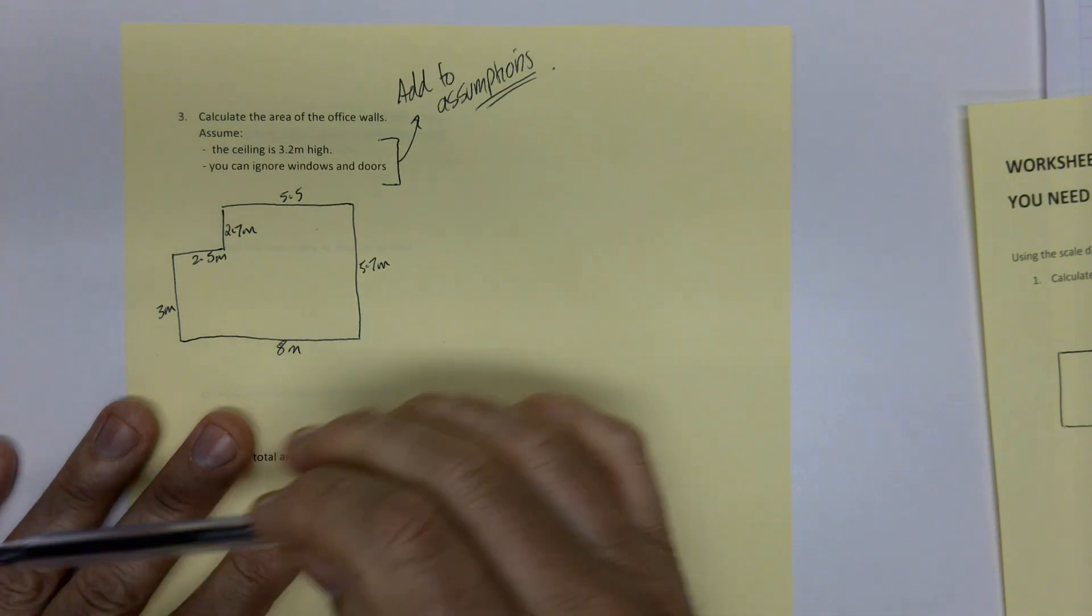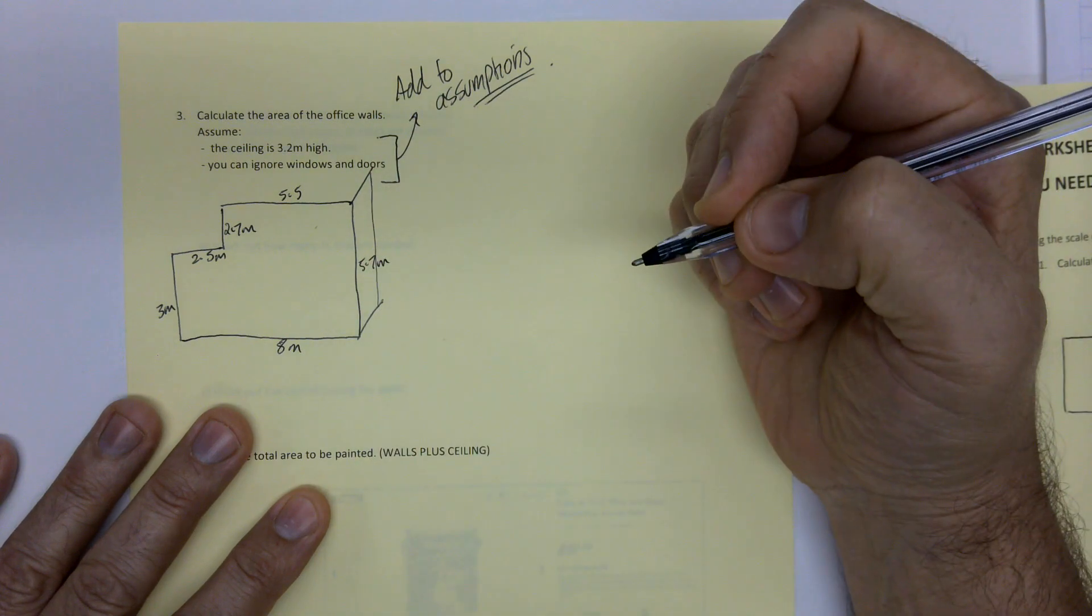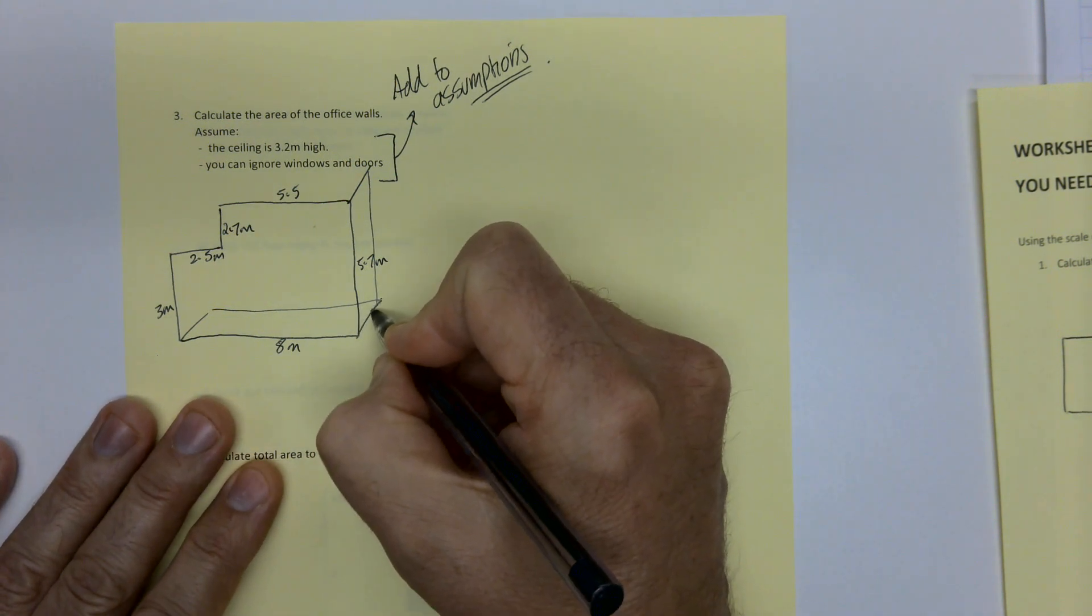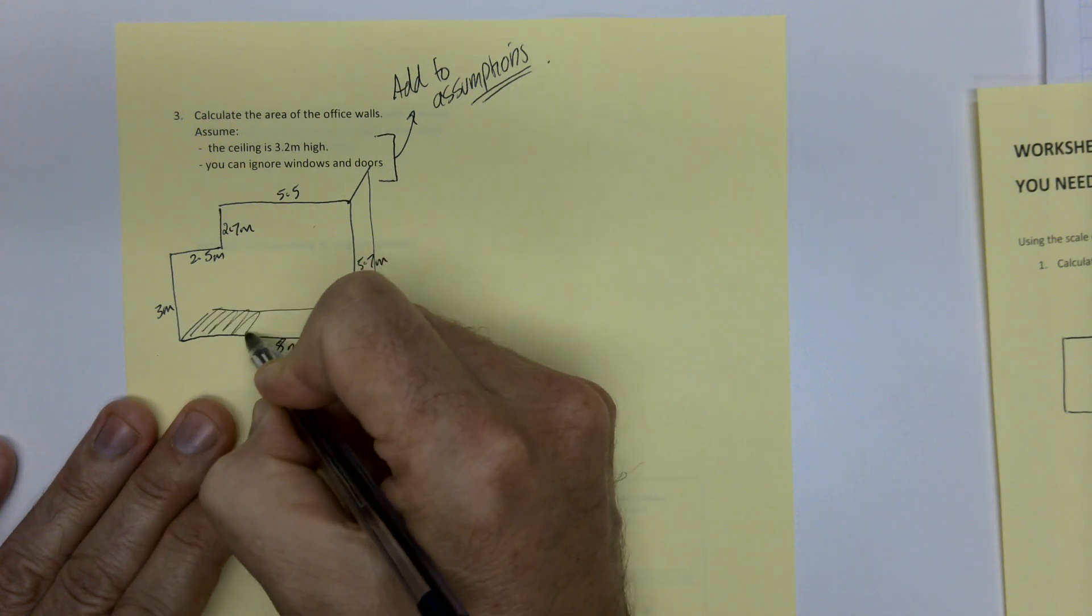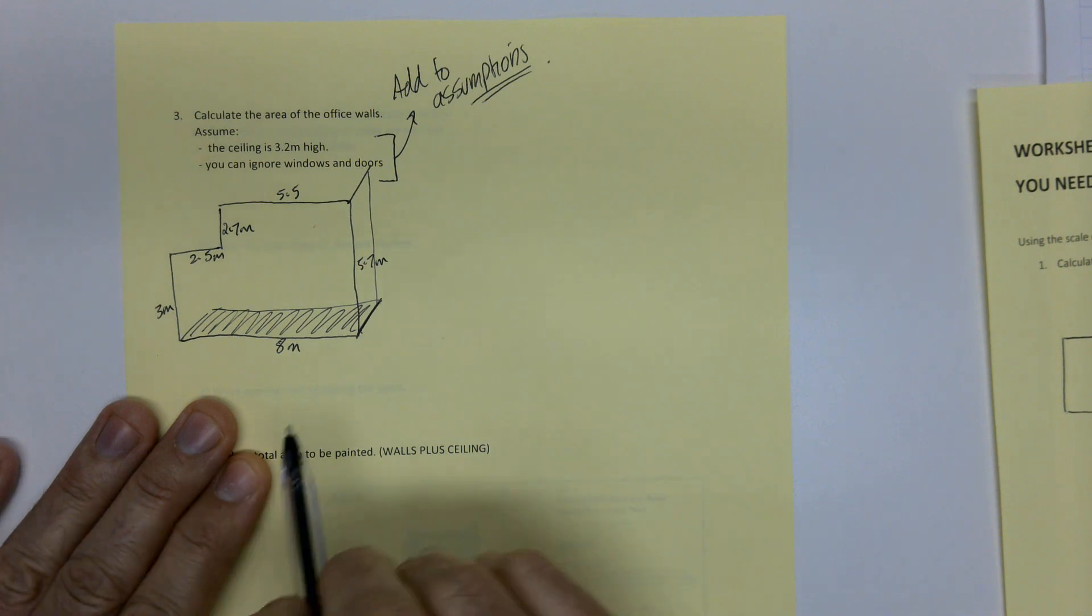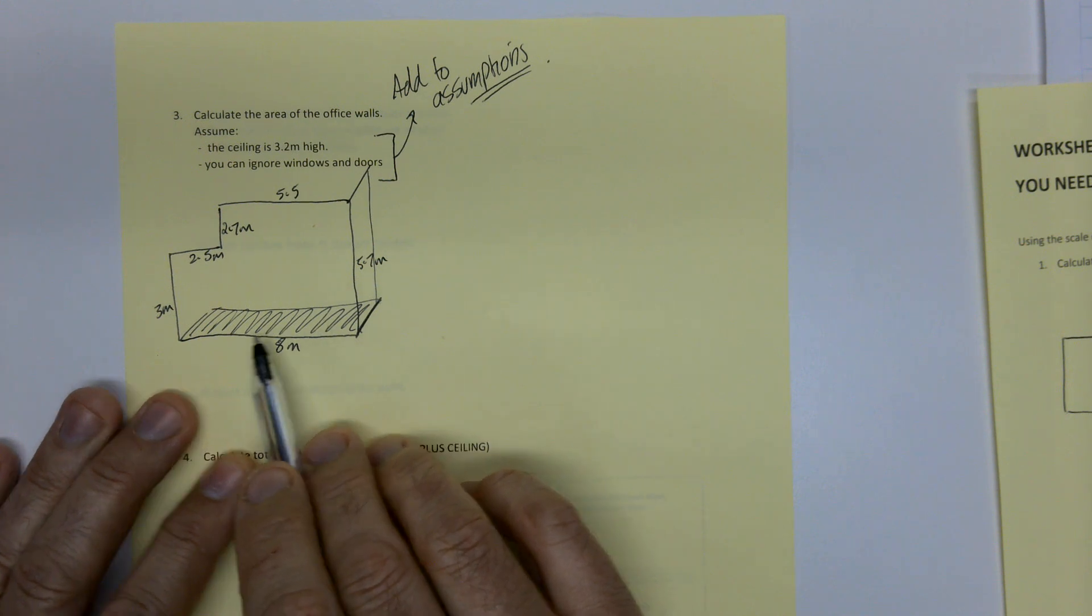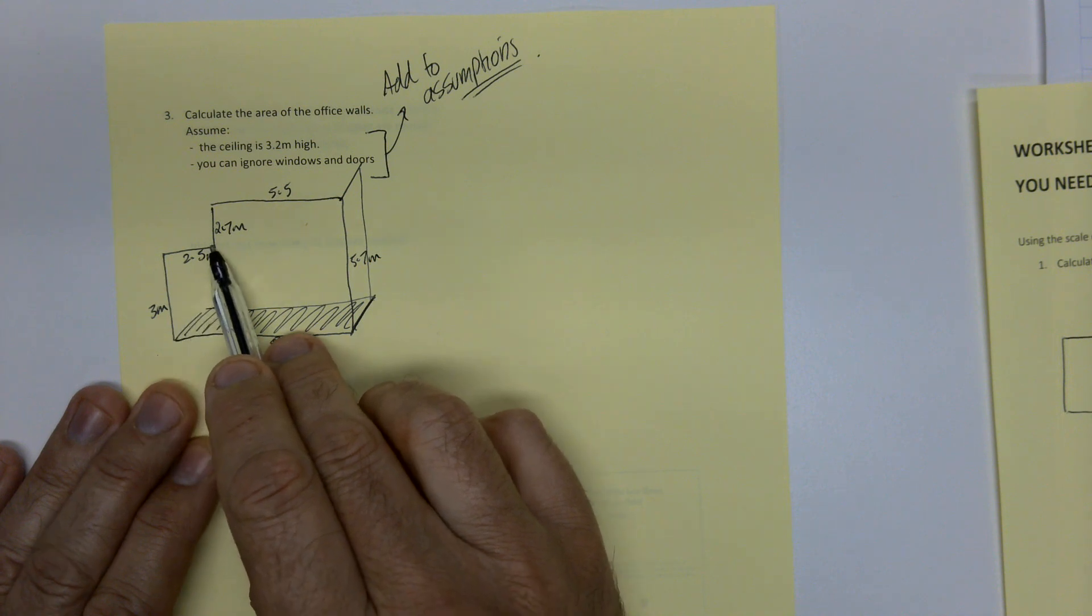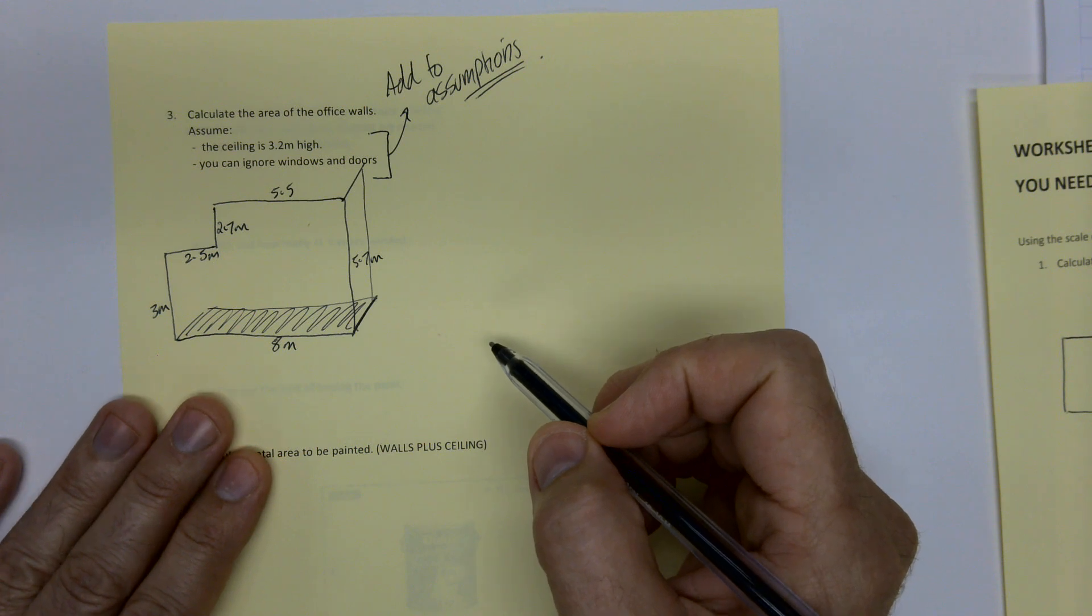Now, if you think about it, you think about going up out of the page, the walls kind of like that, aren't they? And you've got 3.2 coming up here. So that there is actually a rectangle. And the area of that is 8 by 3.2. The easy way to do this is to find the perimeter of the whole thing, and then just multiply the perimeter by the height. And that'll give us the area of the walls.